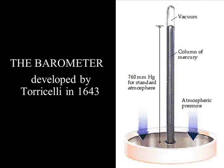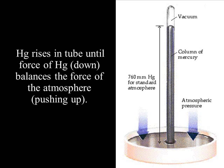The barometer, which measures barometric or atmospheric pressure, was developed by Torricelli. And it is a tube of mercury sitting in a pan of mercury. And as the atmosphere pushes down on the pan of mercury, it forces the mercury up the tube to a height of 760 millimeters. And this height is related to the pressure pushing down on the surface. So the mercury rises in the tube until the force of the mercury pushing down balances the force of the atmosphere that is pushing up.